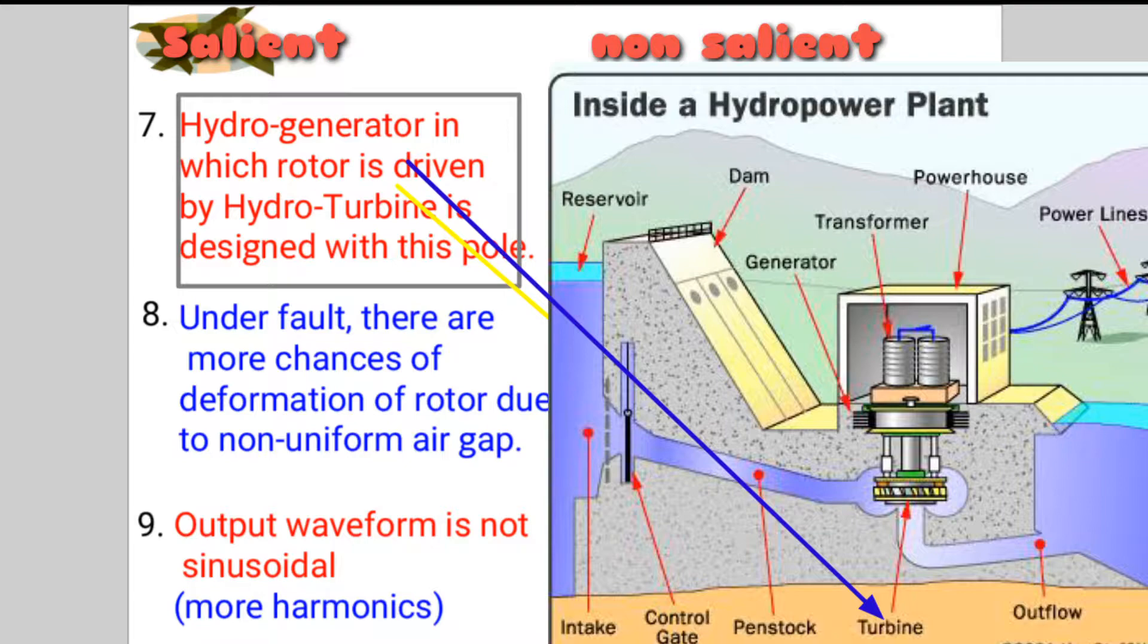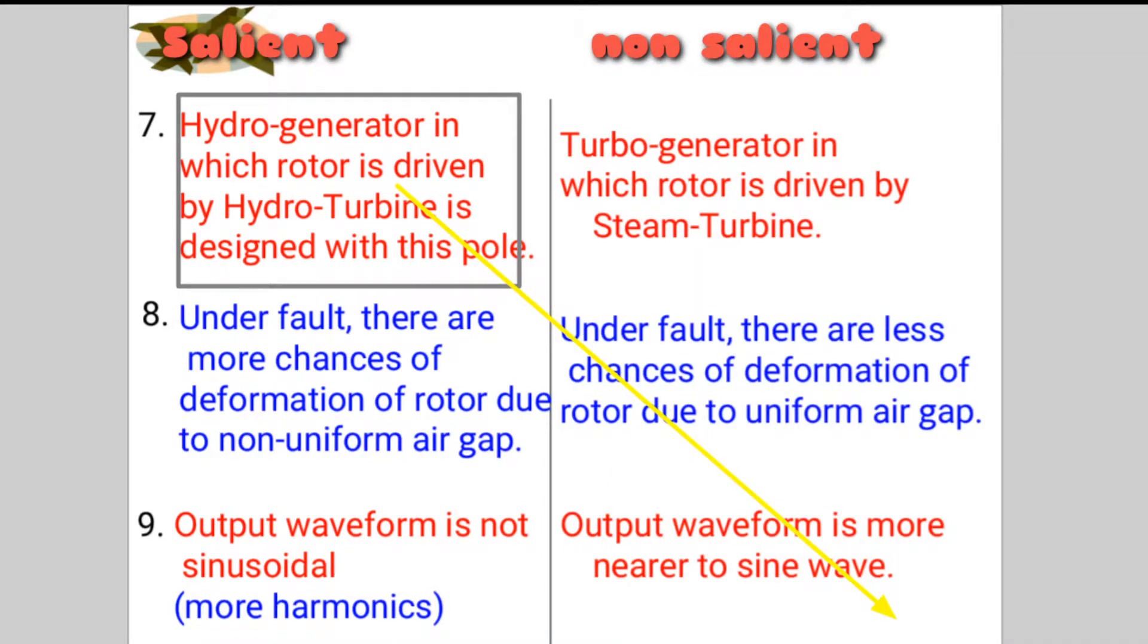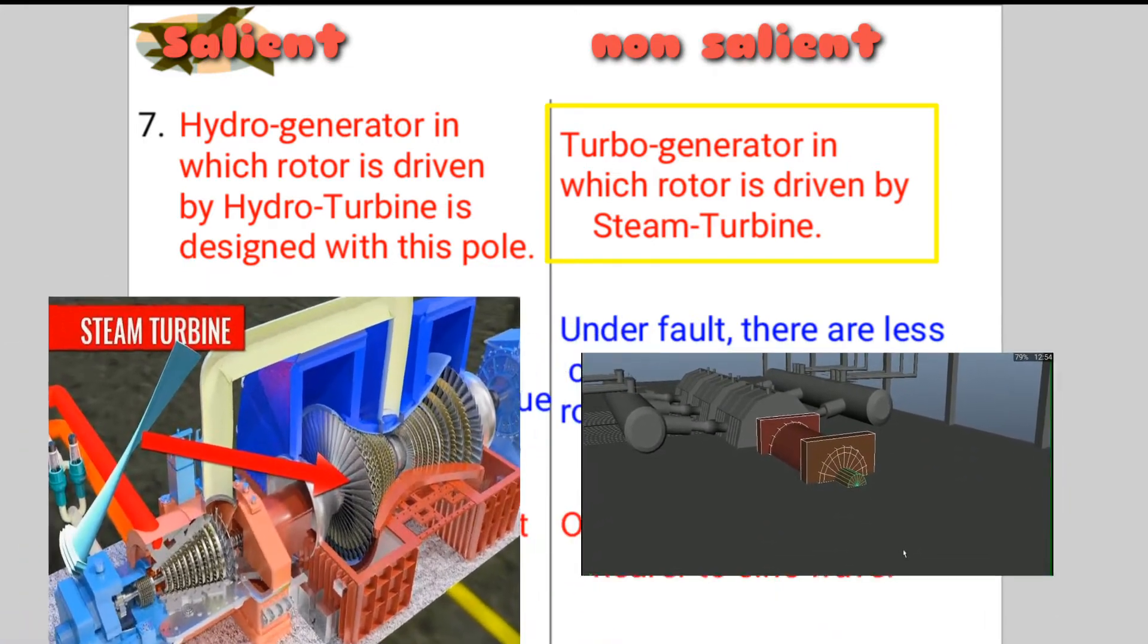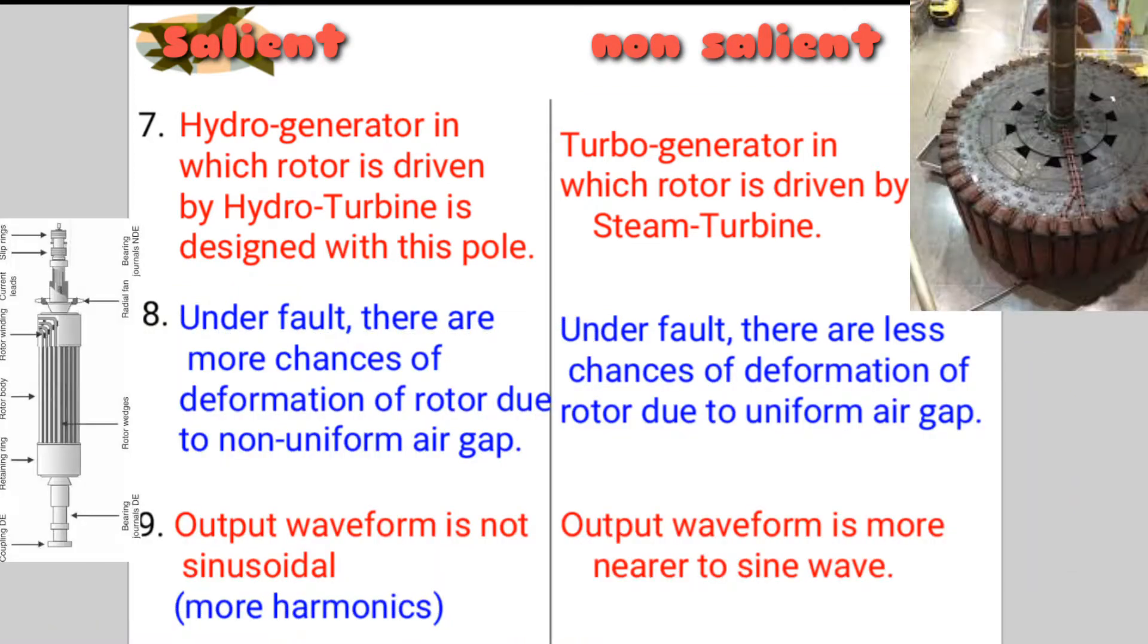Used in hydro generator in which rotor is driven by hydro turbine, is designed with this pole. Turbo generator in which rotor is driven by steam turbine. Under fault, there are more chances of deformation of rotor due to non-uniform air gap. But in turbo generator...